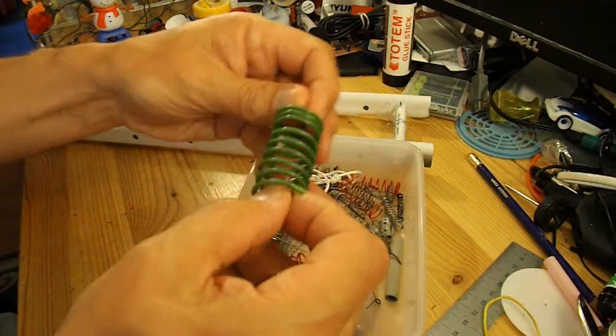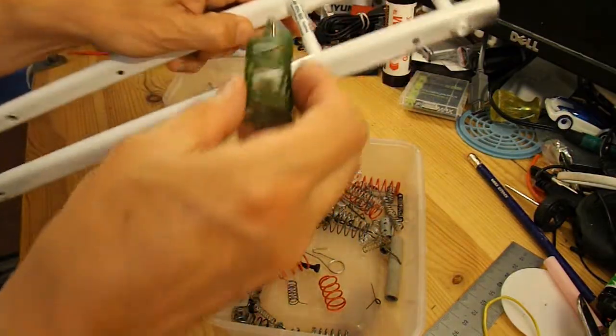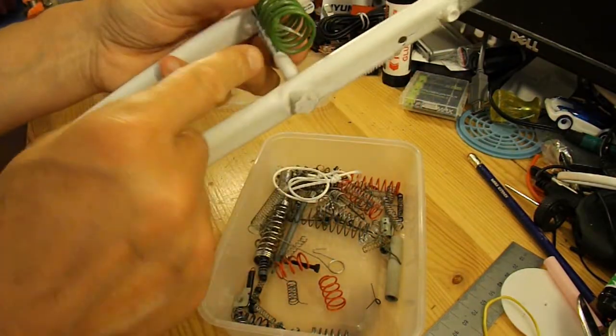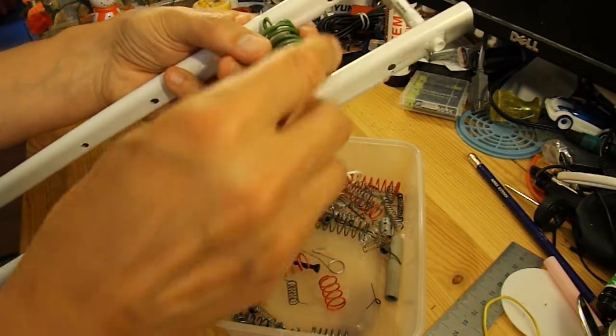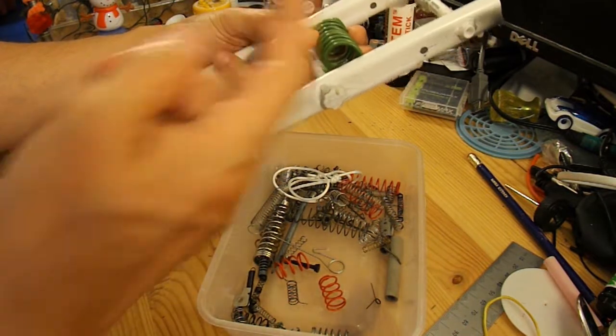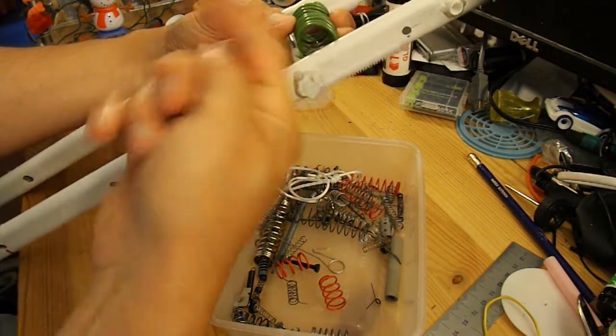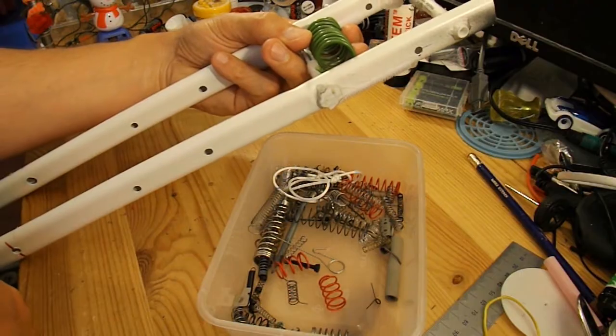So instead of stretching it, I'm going to wrap it around that cross member, attach an arm to that bit sticking up, and use it in torsion mode instead, and see how it gets on.